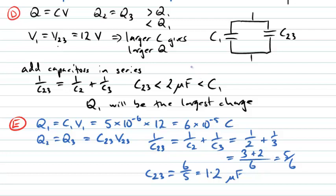So as we predicted in the development stage, C23 is a capacitance smaller than both C2 and C3. It's smaller than 3 microfarads and smaller than 2 microfarads.